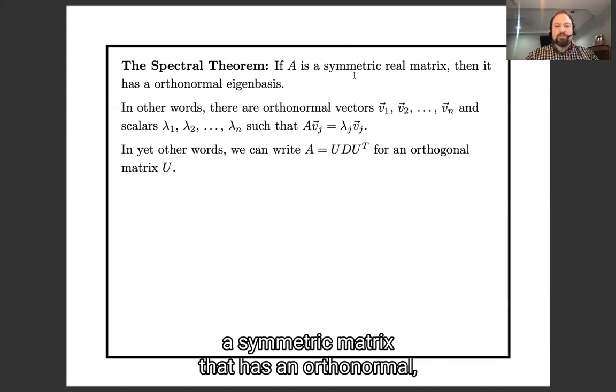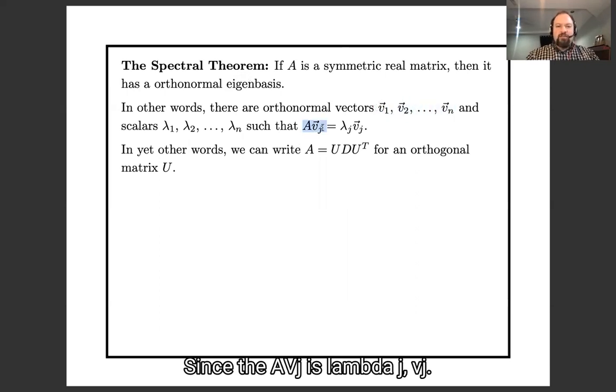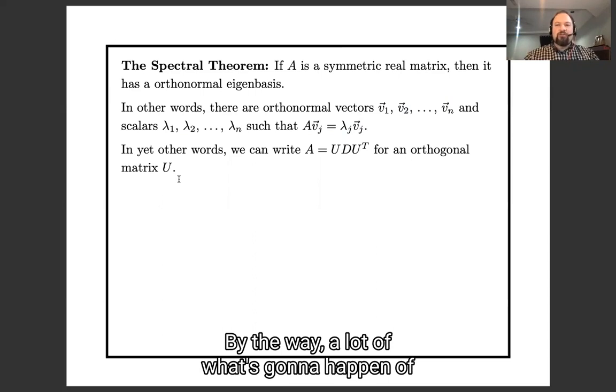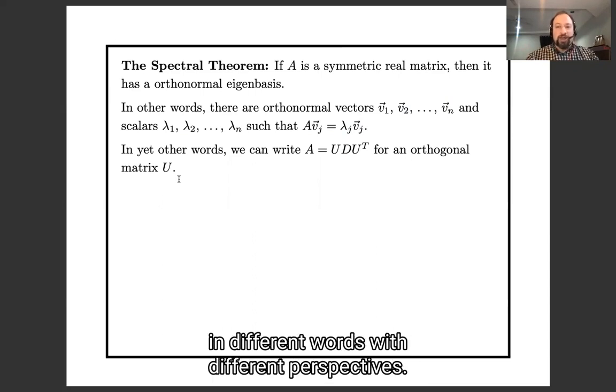So spectral theorem says if we have a symmetric matrix that has an orthonormal eigenbasis, in other words they're orthogonal vectors v1 through vn such that Avj = λjvj, and in yet other words we could write A = UDU^T for some orthogonal matrix U.